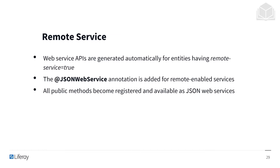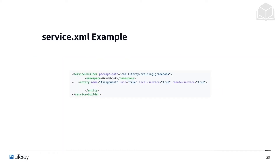For the remote service, web service APIs are generated automatically for entities having the remote service equal true attribute. The @JSONWebService annotation is added for remote-enabled services. Here's an example of adding remote service equals true in service.xml — specifically, adding remote service equals true to the assignment entity.